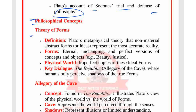Plato's theory of forms is his metaphysical theory that non-material abstract forms or ideas represent the most accurate reality. Forms are eternal, unchanging, and perfect versions of concepts and objects — such as beauty and justice. The physical world consists of imperfect copies of these ideal forms. In the Republic's allegory of the cave, humans only perceive shadows of the true forms.